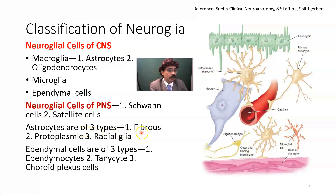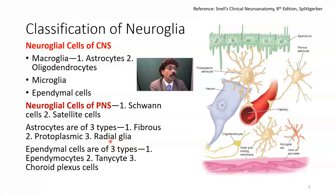Astrocytes are of three types. Fibrous astrocytes are present in the white matter. Protoplasmic astrocytes are present in the gray matter. Radial glia are found in the embryonic brain and help in the movement of neurons during development in embryonic life and early childhood.